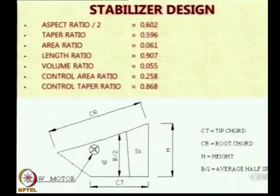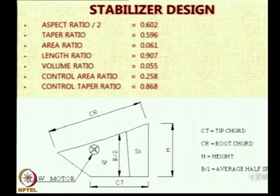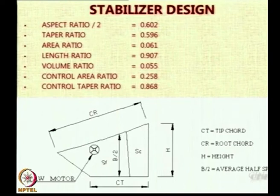Similarly, we did the same thing for other parameters: find the taper ratio of all these airships — values like 5, 5.29, 5.73, 5.63 — and take the average, which came to 0.596. Looking at statistical information for many airships, we obtained these ratios. You will be surprised that these ratios are now being used by many people worldwide to size fins. Many people have cited our paper saying the main thing they took was the sizing of the fins, because a full stability analysis is a big headache.